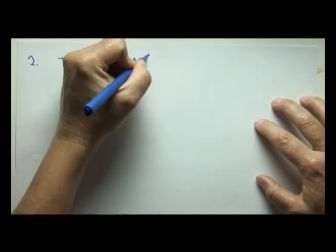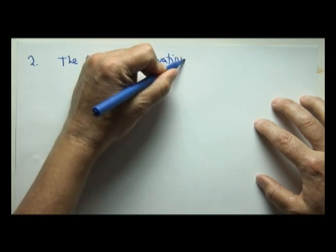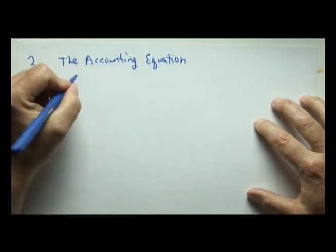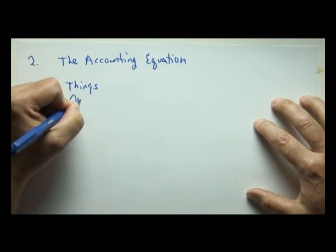This accounting equation, as you might guess with the word equation, means something has to equal. In accounting, we take everything that a business owns, and we're going to call these things owned.